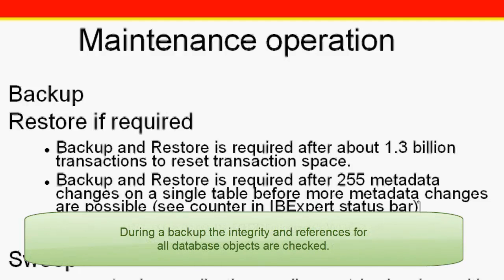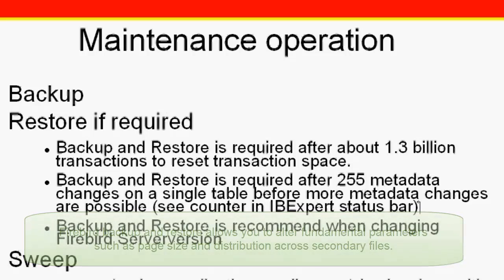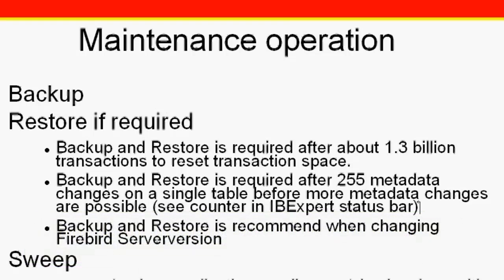During a Firebird backup, the integrity and references for all database objects — for example domains, tables, indices, views, triggers, procedures, generators, exceptions, and permissions — are checked. Executing a backup and restore is the only way to subsequently alter fundamental parameters in the database structure such as page size and distribution across secondary files. It is therefore recommended to not only backup but also restore the database regularly, for example once a month.